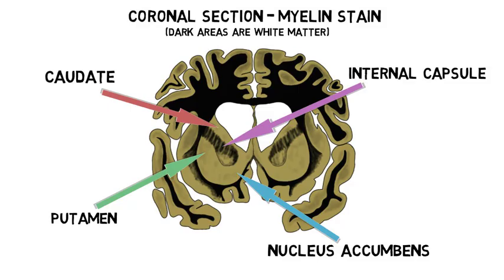The striatum is often conceptualized as being divided into dorsal and ventral sections. The dorsal striatum contains the caudate and putamen, while the ventral striatum contains the nucleus accumbens.